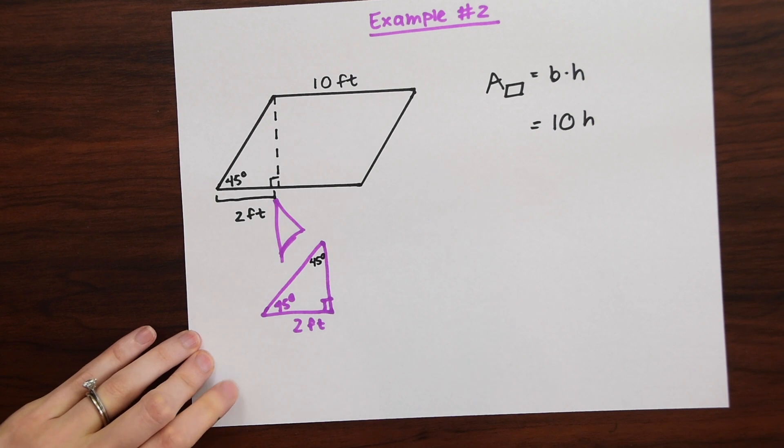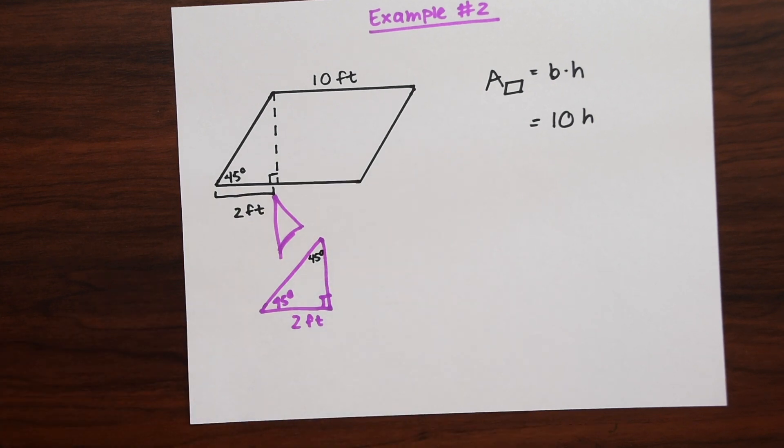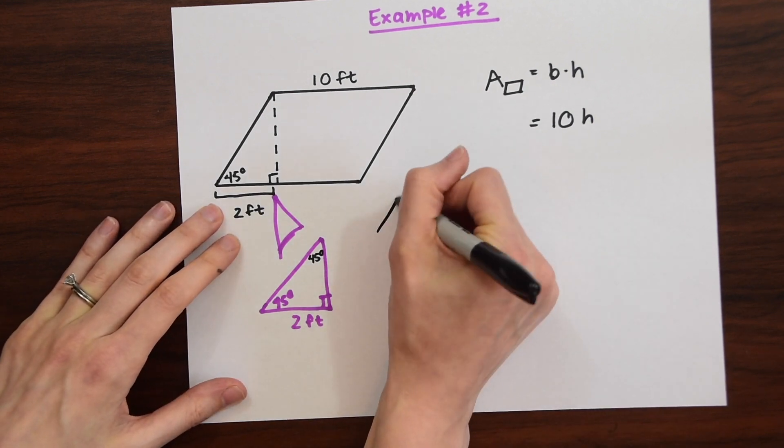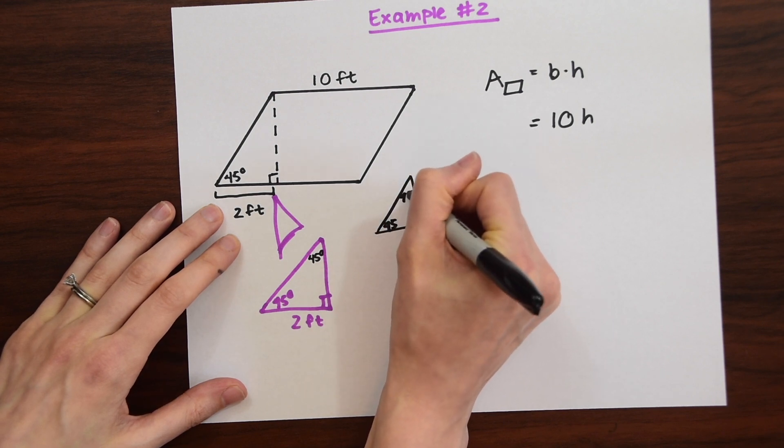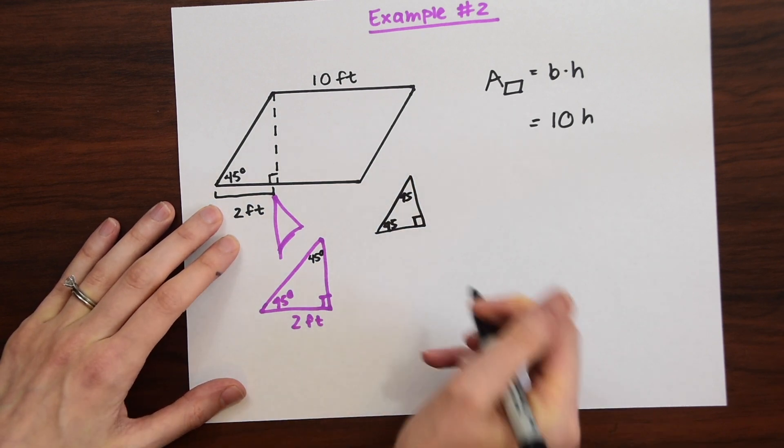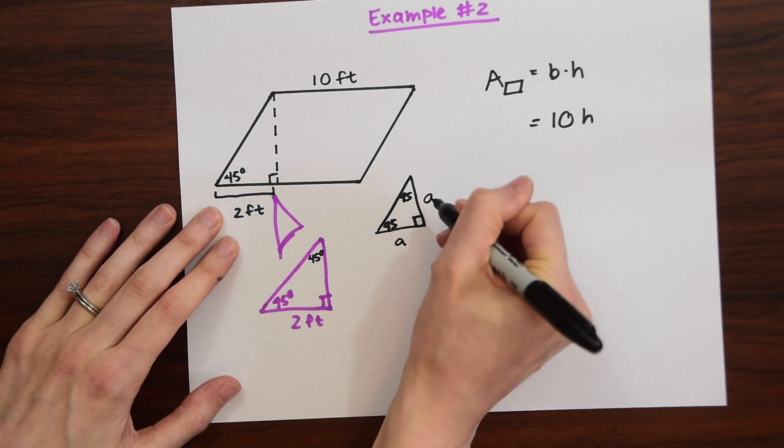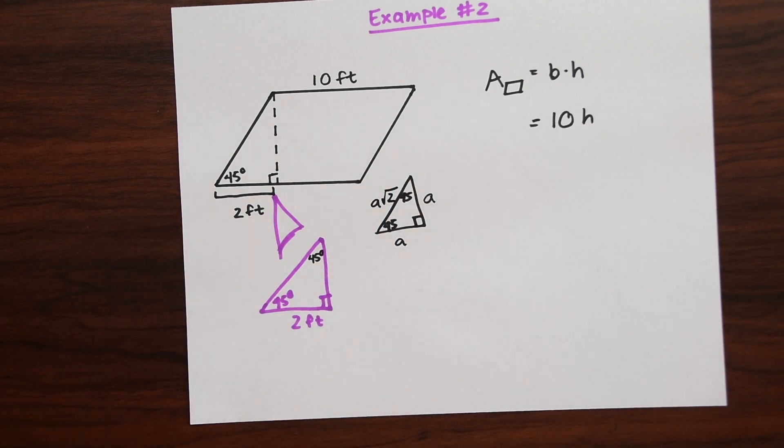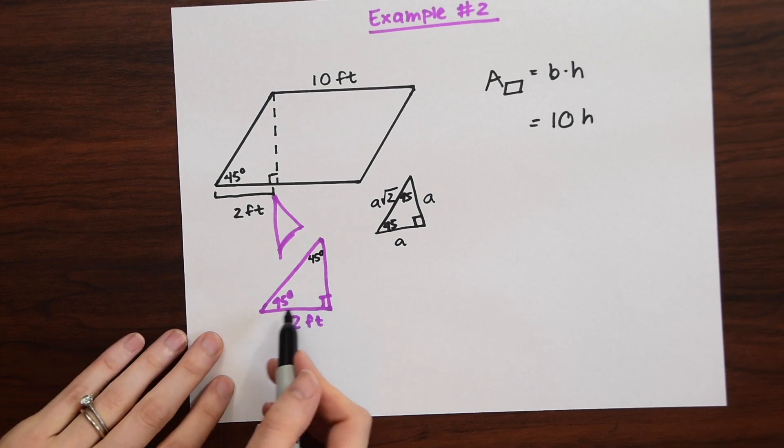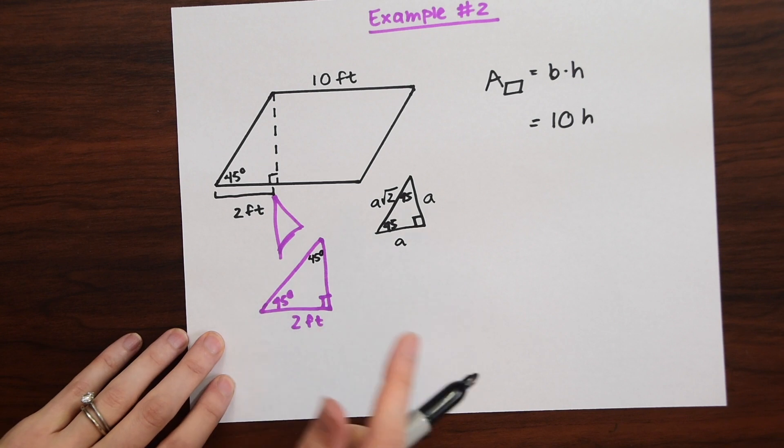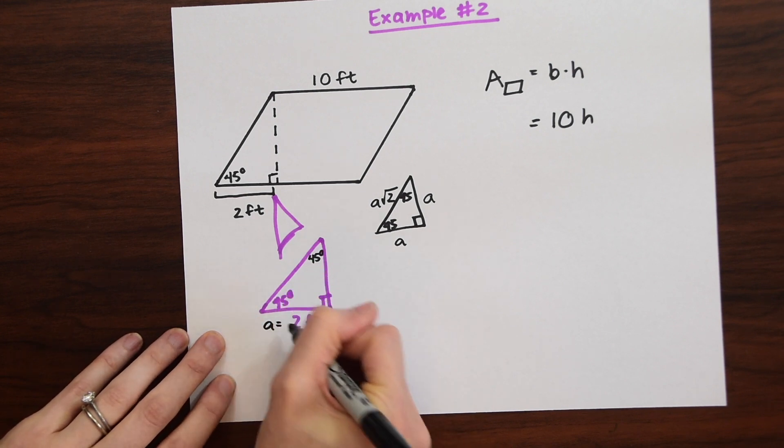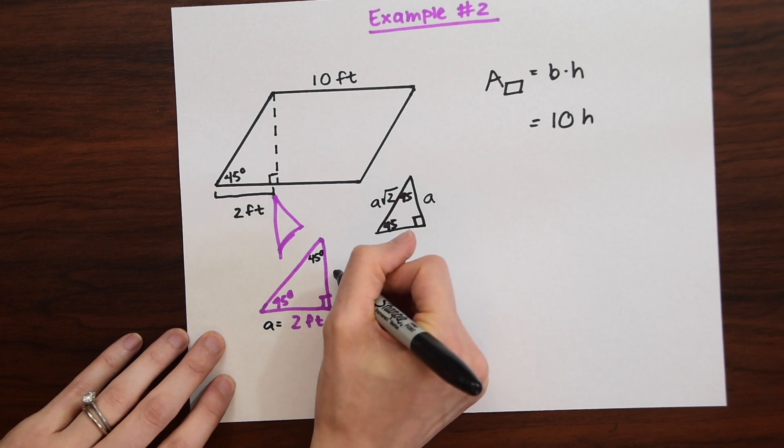Just a reminder of what that ratio is I'm just going to write it over here real quickly. So 45-45-90. So the ratio is always a, a, a√2. So knowing that we can look back at our triangle that we have from our parallelogram and see that a is equal to 2 because this is a side down here. So a equals 2. So that means this side also is going to equal 2.